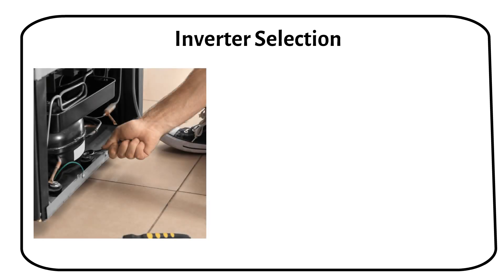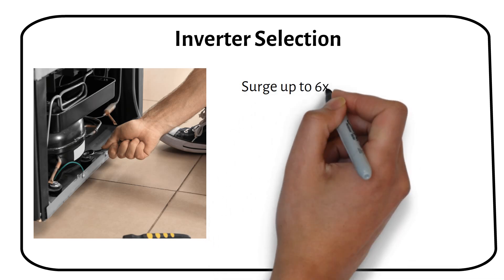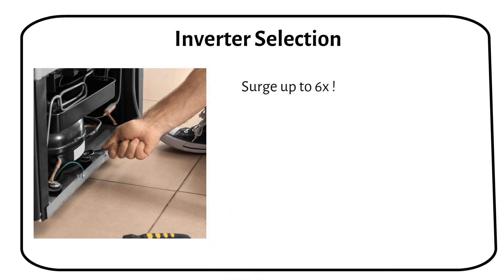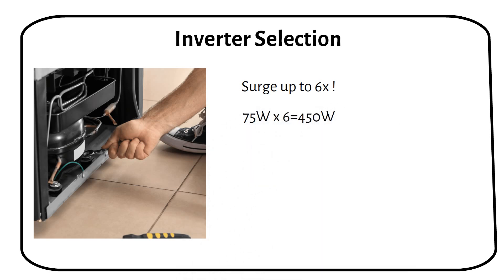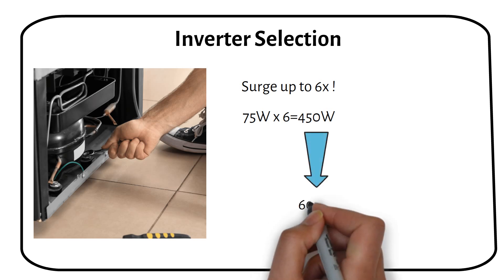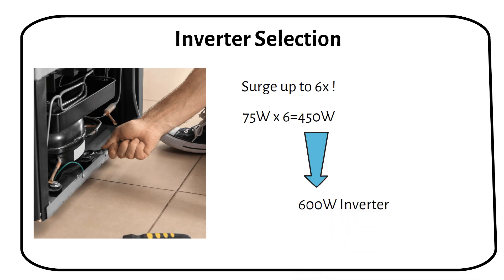Let's pivot to a crucial piece of the puzzle, selecting an inverter that matches your fridge needs. It's not just about the regular running power, we've got to consider the initial power surge that happens every time when the fridge compressor kicks in. This surge can momentarily require up to 6 times the fridge rated power. A fridge with a rated power of 75 watts, you're looking at a surge requirement of up to 450 watts. Because of this, I've opted for a 600 watt inverter for my setup. It comfortably handles the surge and ensures everything runs smoothly without tripping or overloading the inverter.